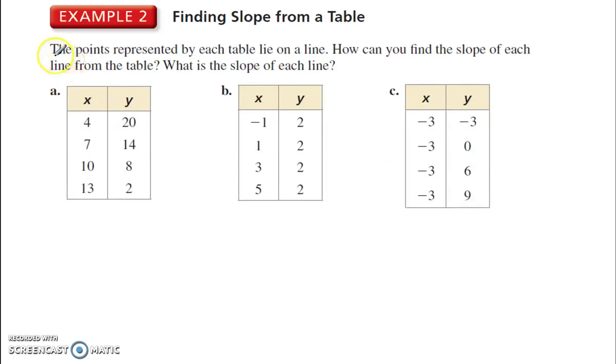Let's look at finding the slope from a table. These points, it tells me that they lie on a line. To find the slope here, remember, the slope is change in y over change in x. So what's the change in y? From 20 to 14, I have to subtract 6.